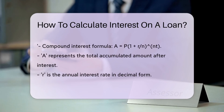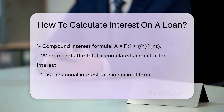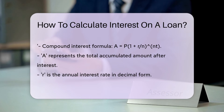But wait, there's another flavor: compound interest. This one's a bit trickier — it's like interest on your interest. It grows faster than simple interest because it's calculated on the accumulated interest over time, as well as on the principal.